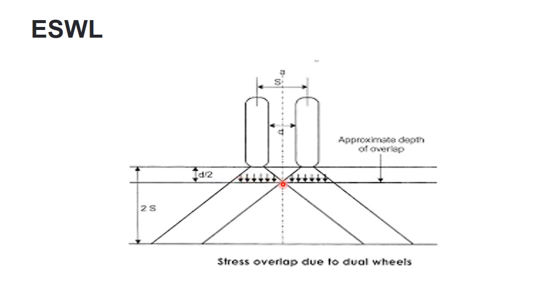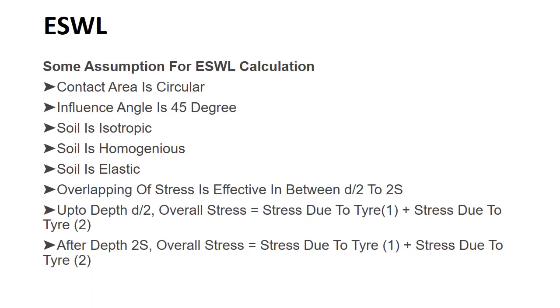Certain assumptions are made for the calculation of ESWL. First, the contact area between the vehicle tyre and pavement surface is considered as circular, and the influence angle is taken as 44 degrees. The soil is isotropic, meaning the substance has physical properties which have the same value when measured in different directions. The soil is considered homogeneous, composed of parts or elements that are all of the same kind. And soil is considered elastic, meaning the material is able to resume its original shape after being stretched or compressed.